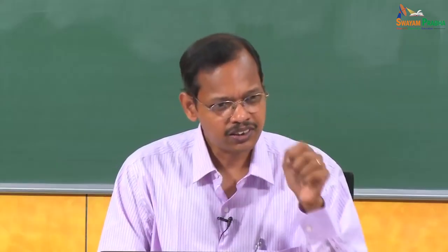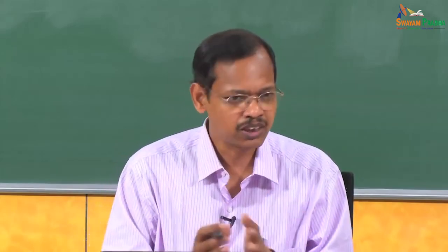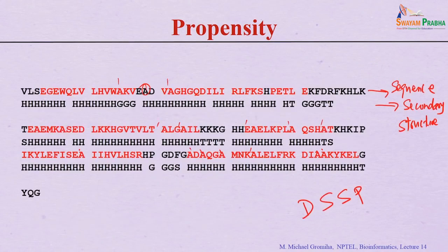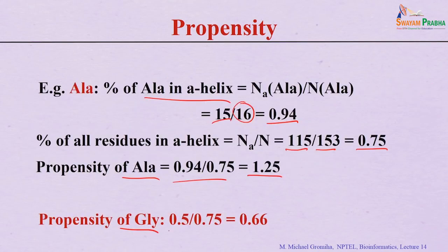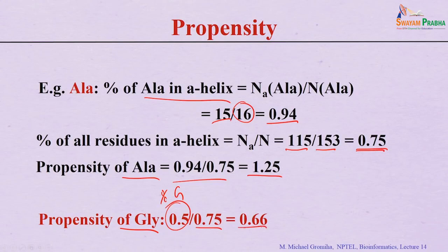For glycine, there are 10 glycines. The percentage of glycine in alpha helix is 0.5, divided by the whole-protein helix fraction of 0.75, giving a propensity of 0.66 — less than 1 — indicating glycine does not prefer alpha helix. This was based on just one protein. Currently, more than 130,000 proteins are in the Protein Data Bank. Using a non-redundant set, you can calculate propensities for all 20 amino acids to get reliable values.